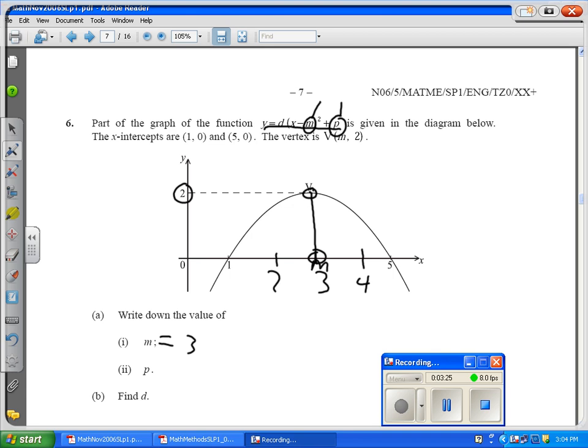For part 2, we need to find P, which is going to be the Y coordinate of the vertex, and will equal to 2. So, P equals to 2.